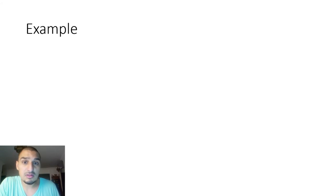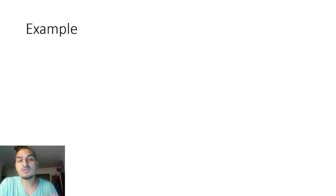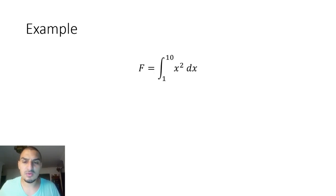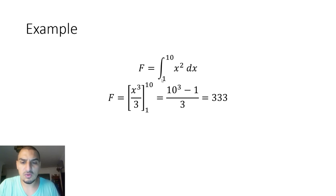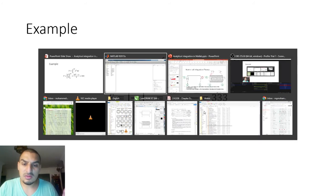What I'm going to do is give an example, solve it analytically, and then see how we can solve it numerically to compare the values. The example is the integral of x² dx from 1 to 10. Solving analytically: x³/3 evaluated from 1 to 10 gives 333.